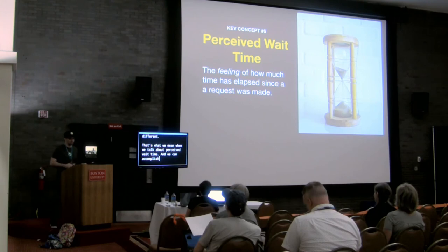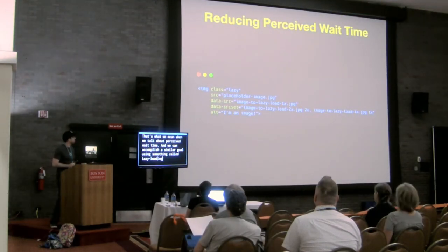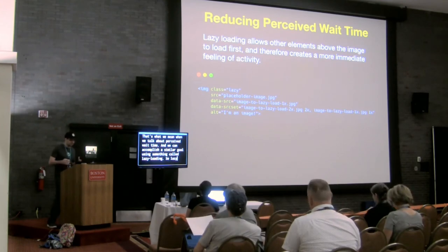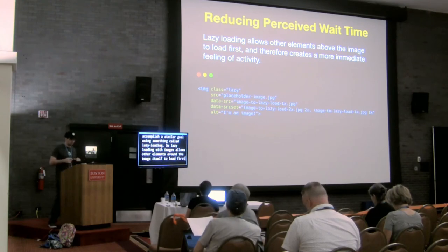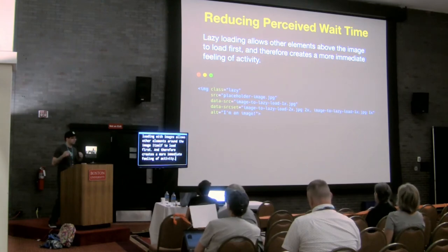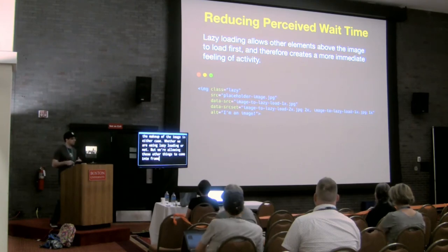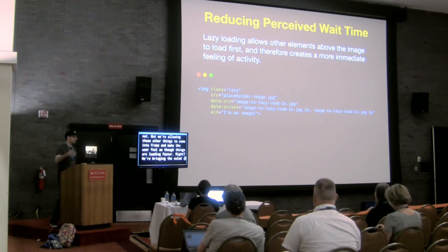That's what we need when we talk about perceived wait time, and we can accomplish a similar goal using something called lazy loading. Lazy loading with images allows other elements around the image itself to load first, creating a more immediate feeling of activity. We've not actually changed the makeup of the image, but we're allowing other things to come into frame and make the user feel as though things are loading faster — we're bringing the salad in, bringing the breadsticks, making that user feel as though a process is underway.